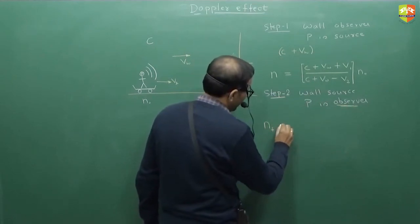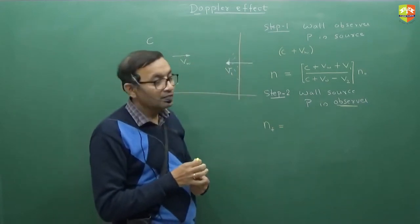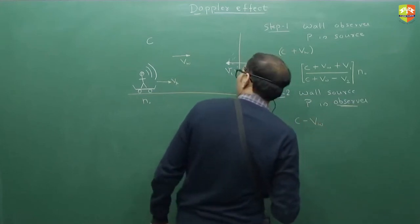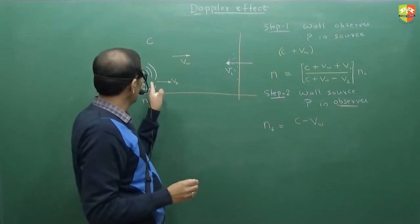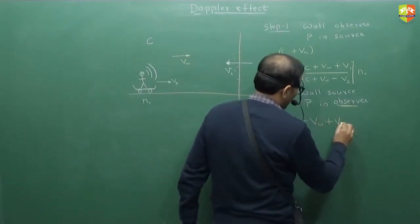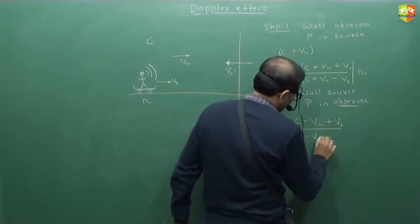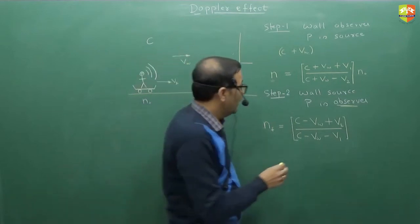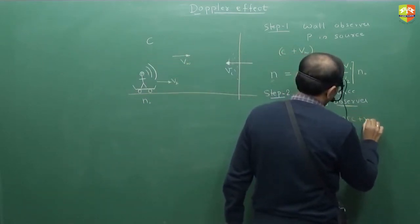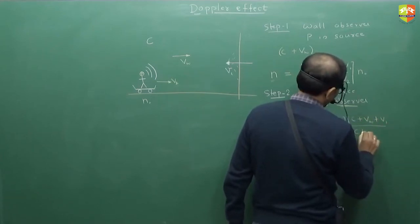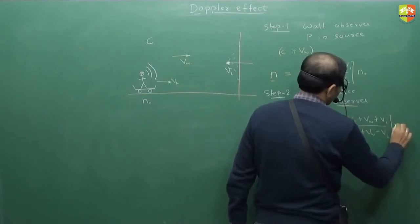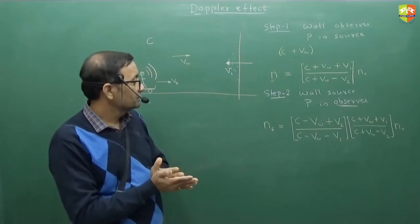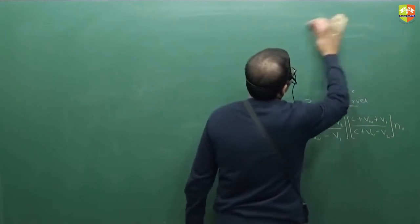The final frequency: Now what you will take speed of sound as? Wind is this way, sound is coming now like that. So c minus, who is source? Wall is source, this observer. So plus v2 or vP divided by c minus vw minus v1, that times n. And what is n? c plus vw plus v1 divided by c plus vw minus v2. How many of you got this? This is what the frequency. And the chapter is over, syllabus is over.